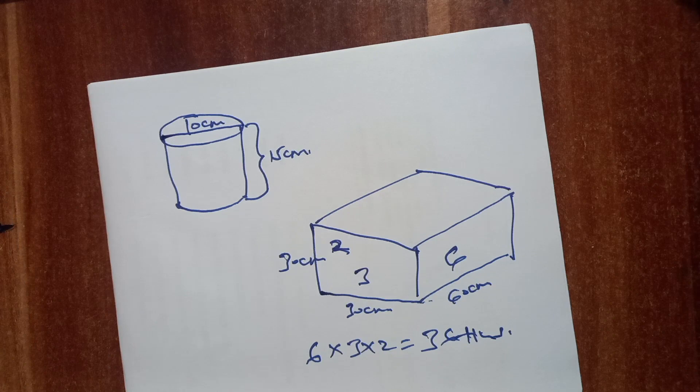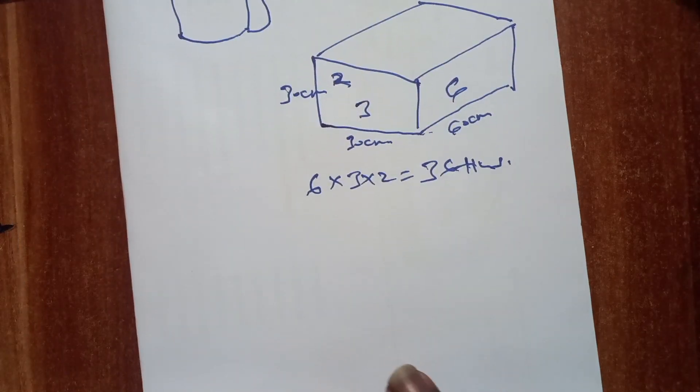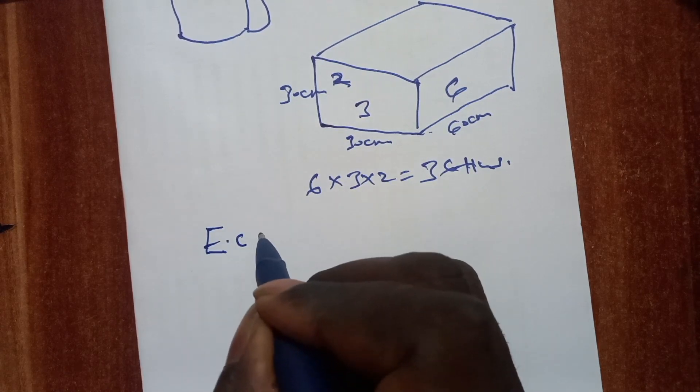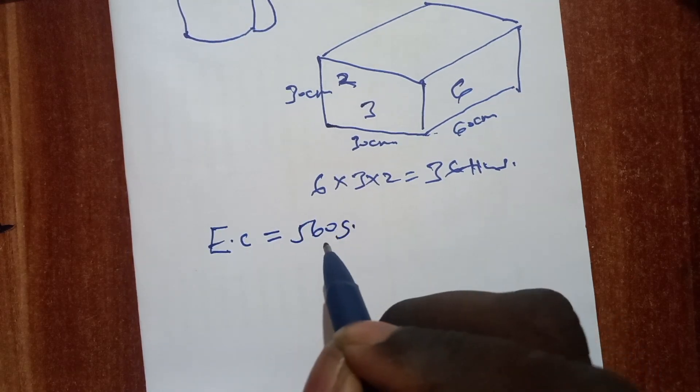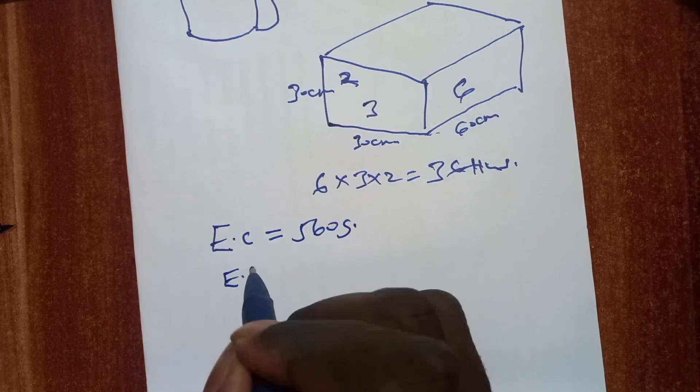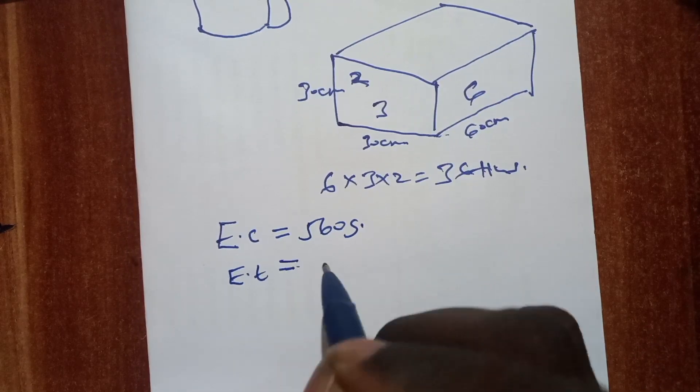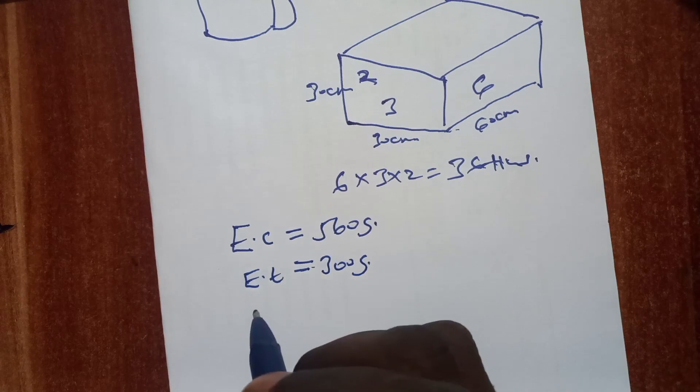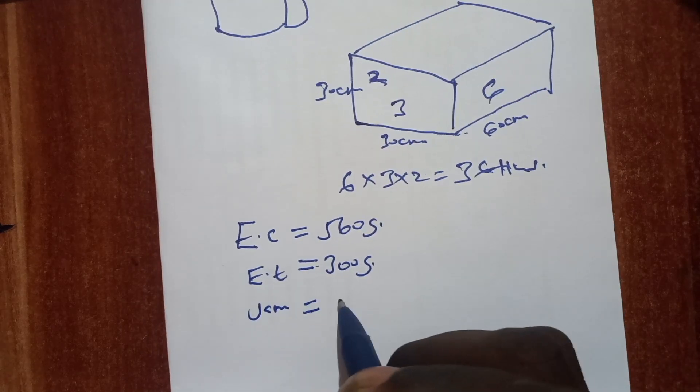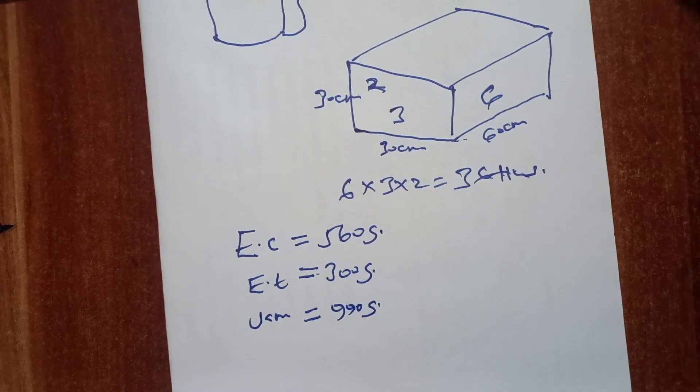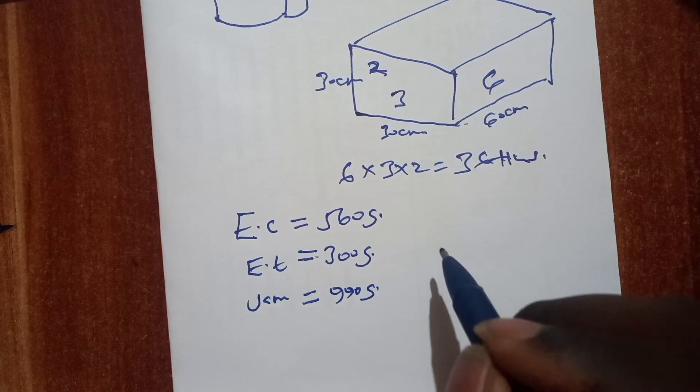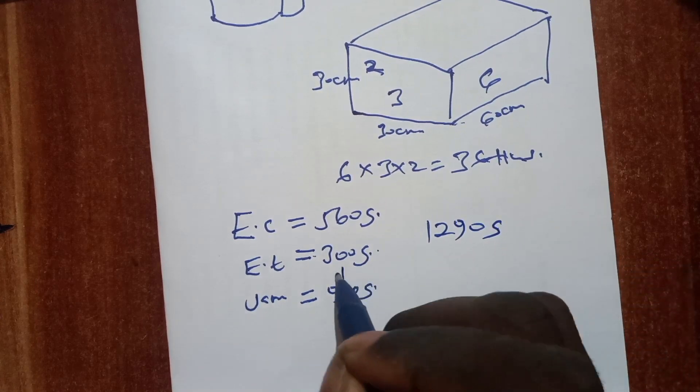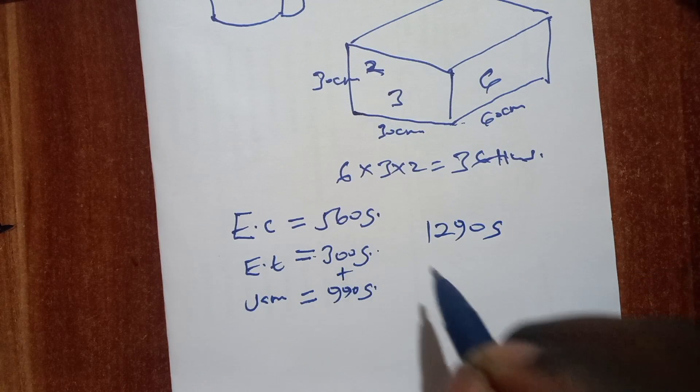Okay, so we have an empty carton which weighs 560 grams, and the empty tin weighs 300 grams. The jam itself in one tin is 990 grams. So a tin with the jam is equivalent to 1290 grams, because it is 300 grams plus 990 grams.